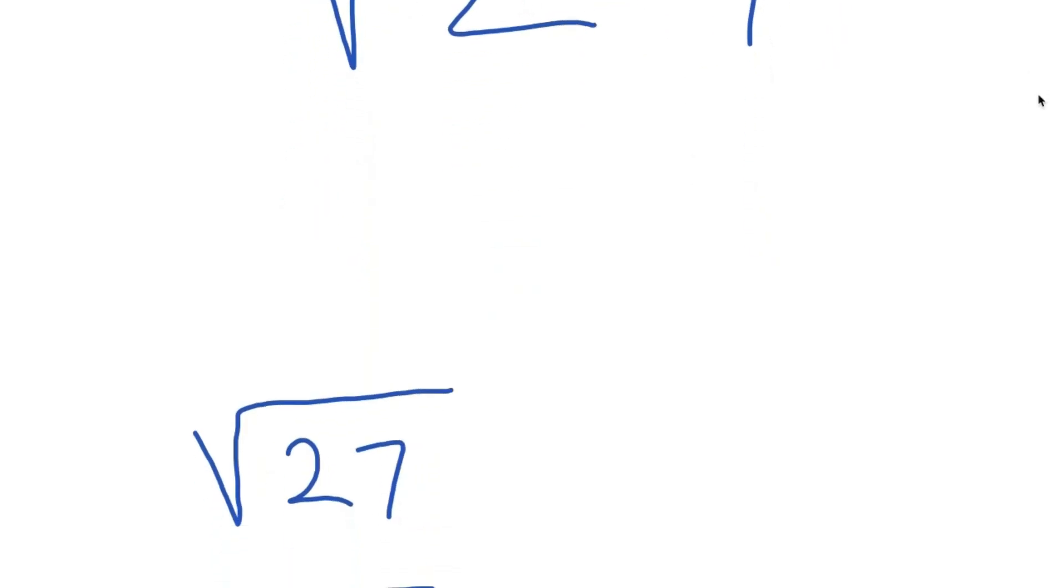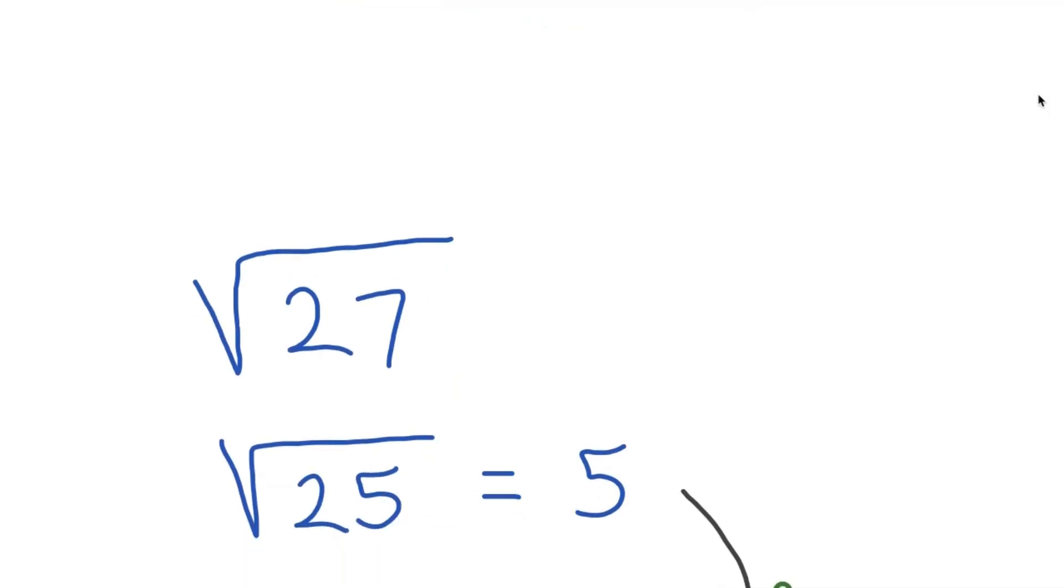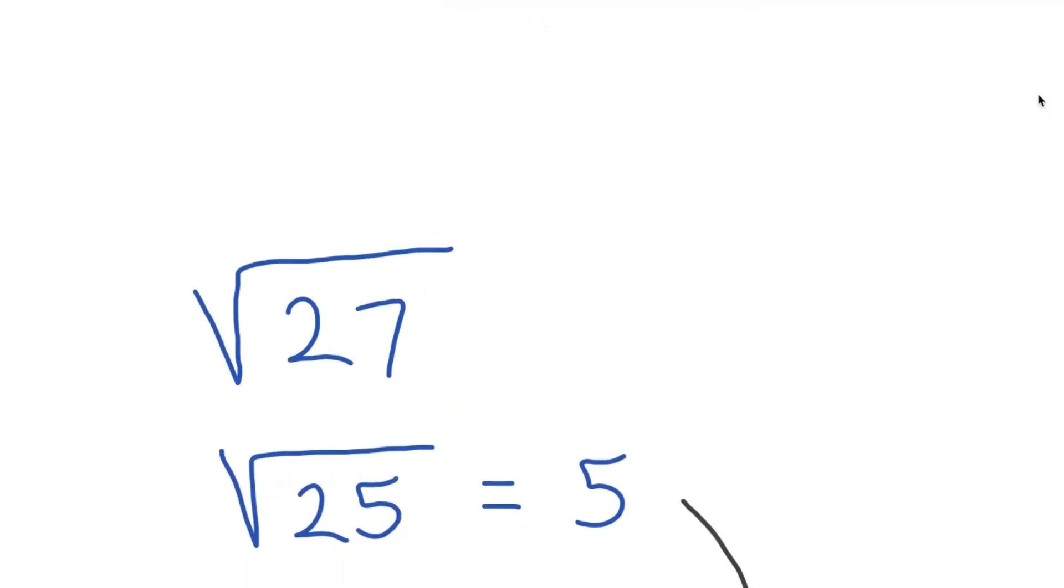So you got square root 27. What you're going to do first with this method is find the largest perfect square right underneath the value of 27, which in our case is square root 25. Square root 25 is just 5.